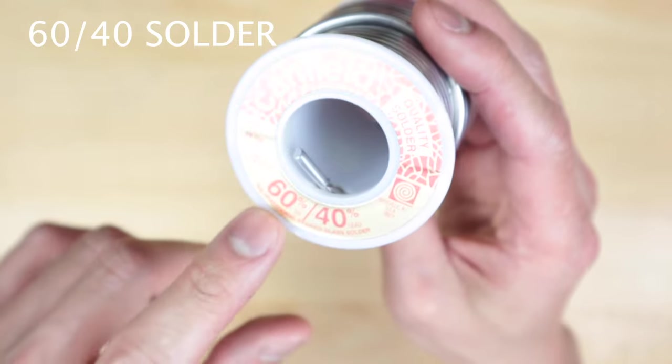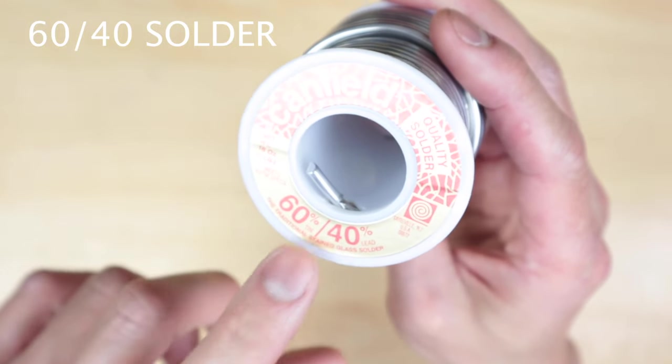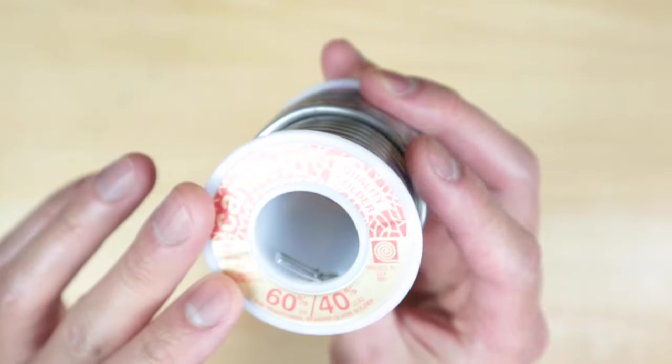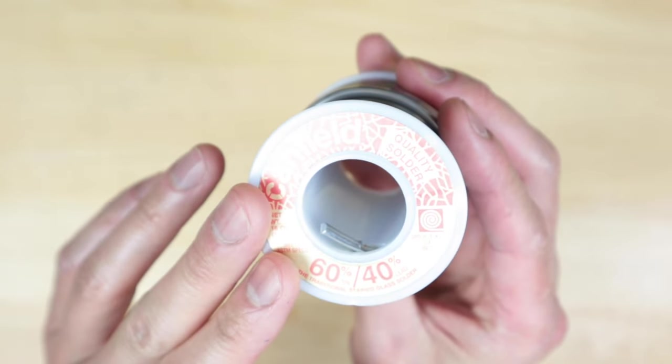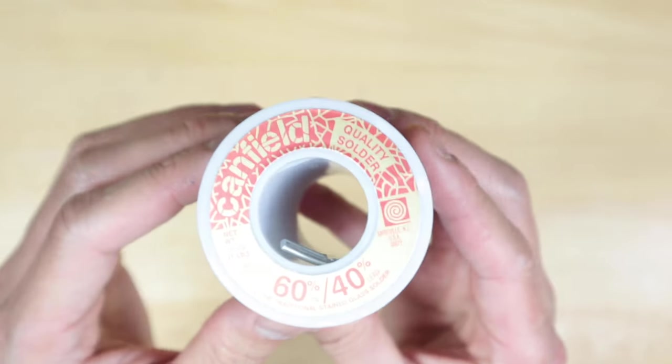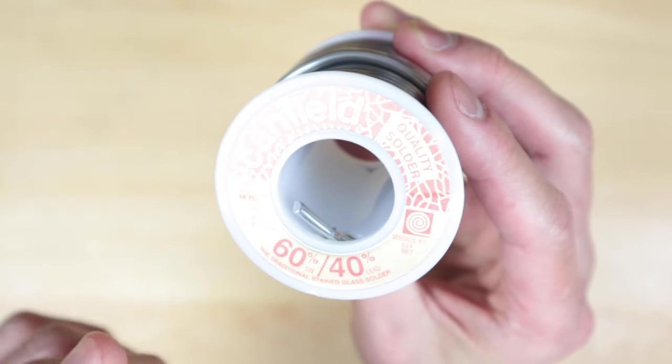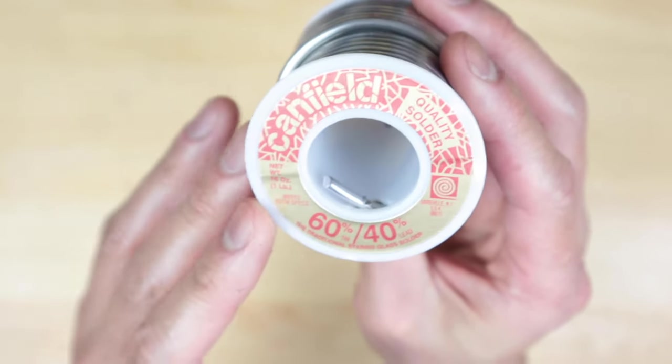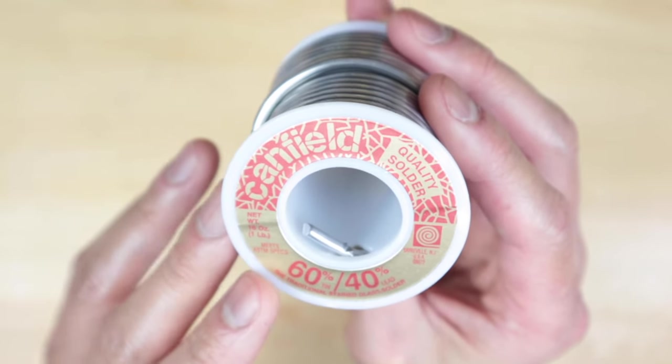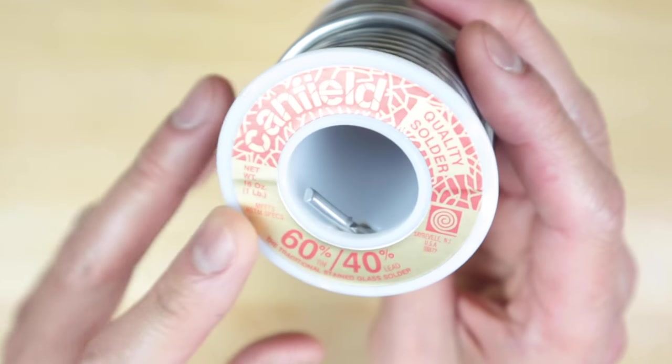For the solder, we're going to use something called a 60-40, 60% tin and 40% lead. Just remember you need to get a solid core 60-40 solder, nothing else. Any combinations of that is going to give you a harder time when you're starting out. Also if you don't get the solid core, you're going to have a lot of problems when you go to solder. This one's a one pound roll and it costs about $20.